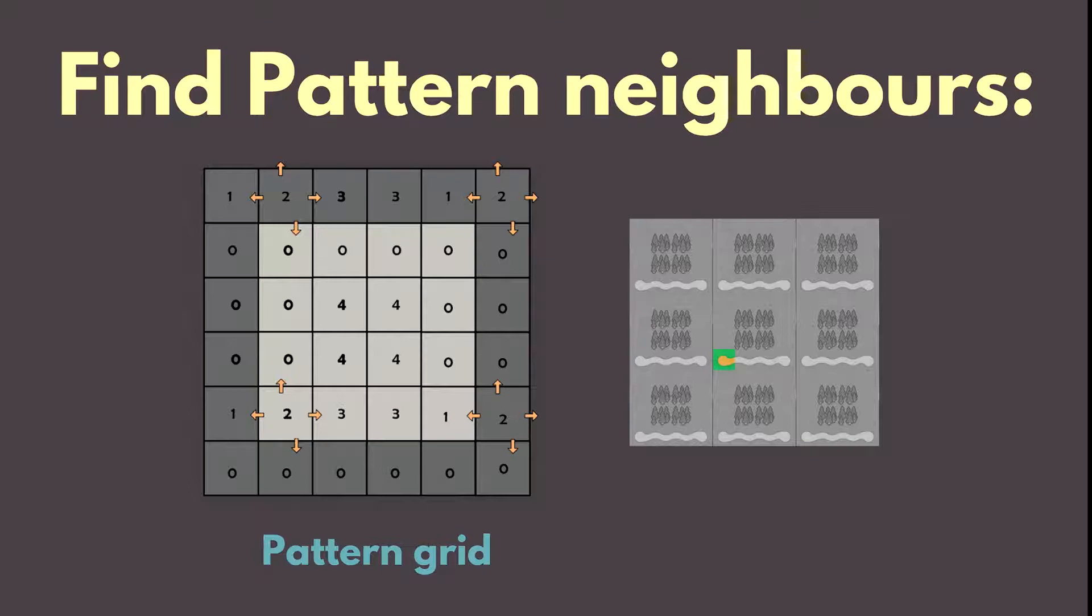To the left it is 1, to the right it's pattern of index 3, and downwards it's also pattern of index 0.